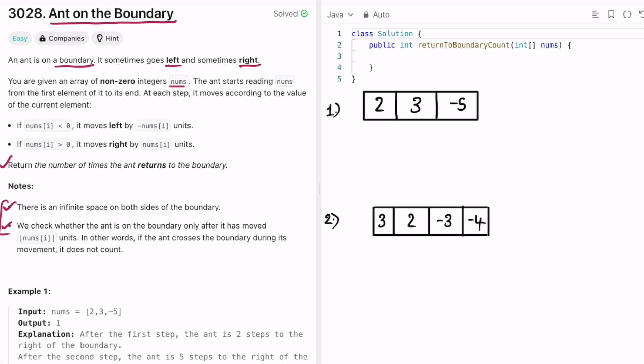In other words, if the ant crosses the boundary during its movement, it does not count. So it exactly has to be on the boundary.